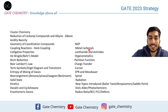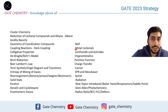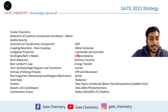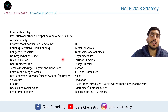Neighboring group participation is very important. Metal carbonyls are again a favorite topic of examiners in GATE, CSIR, and other competitive exams, but I haven't seen many questions on this in the last couple of years, so make sure you study metal carbonyls thoroughly. Lanthanides and actinides are frequently asked in CSIR NET, and I expect you'll see more questions on them in GATE as well.